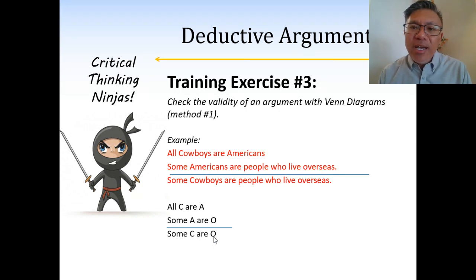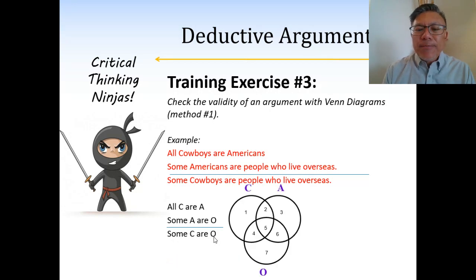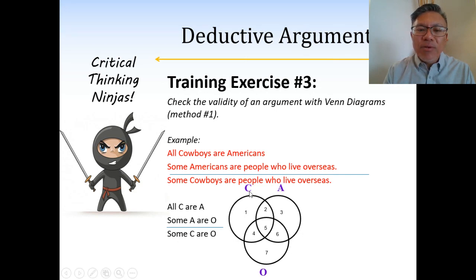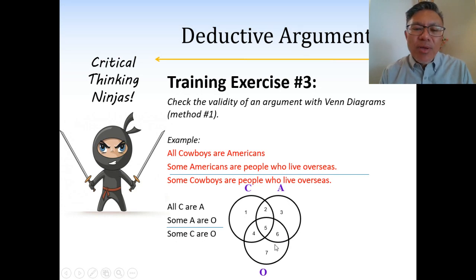Now let's look at the Venn diagram. We need three interlocking circles, each representing a category or term. Here's our C category — Cowboys. Here's our A category — Americans. And here's our O category — people who live overseas.